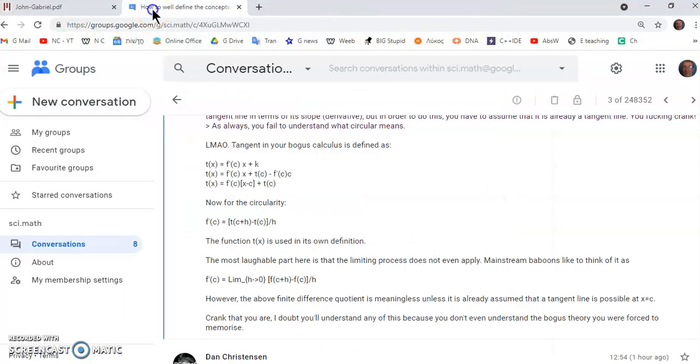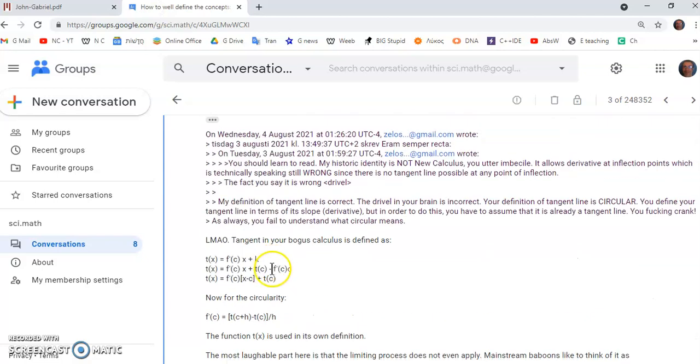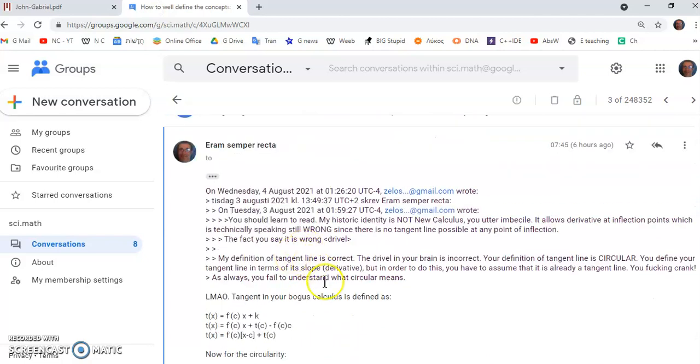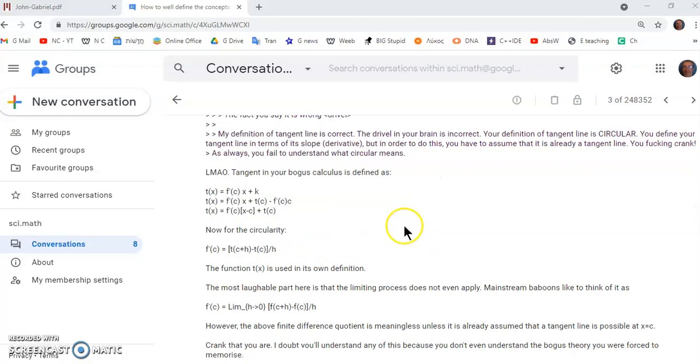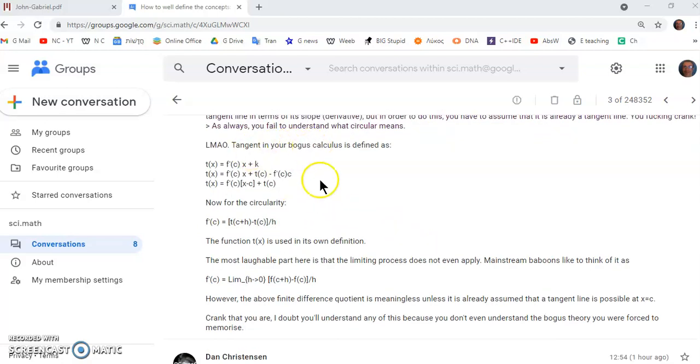Now, in a recent discussion, there's this incorrigible troll who also claims to have a master degree in mathematics from Sweden, his name is Lars Malmum. It's quite interesting, as he tells me as always, you fail to understand what circular means. But tangent in mainstream calculus, which is bogus, is defined as you see here.